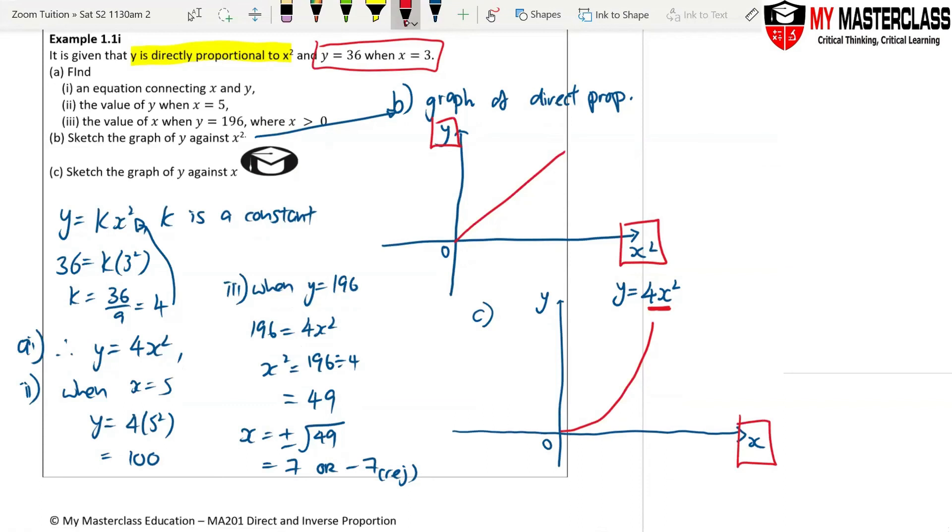So you have to think: oh, 4x square is a U shape, I have to draw a U shape graph, but I only start from 0. Understand the difference between these two? So the graph of direct proportion is always a straight line that is going up.